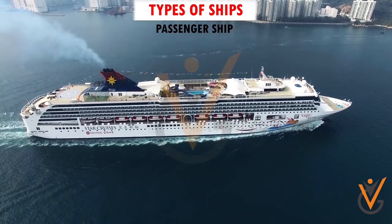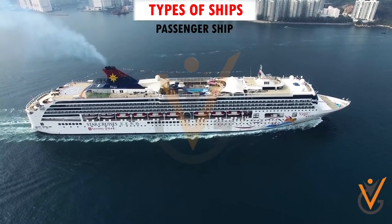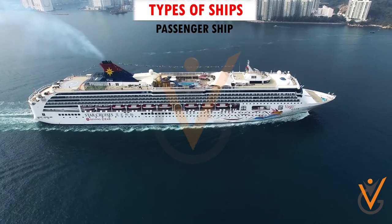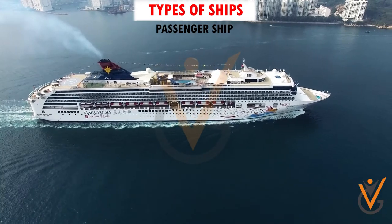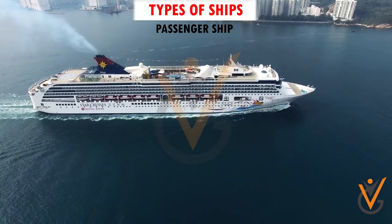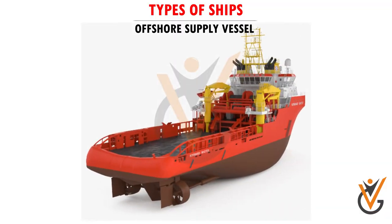A passenger ship, cruise liner, or ferry is a ship whose primary function is to carry passengers. This category does not include cargo vessels which have accommodations for limited numbers of passengers. An offshore supply vessel (OSV) is a ship specially designed to supply offshore oil platforms.